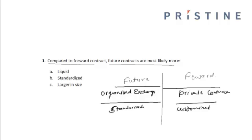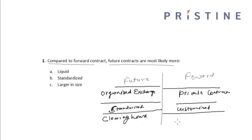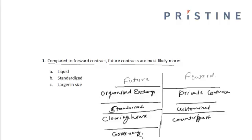A single clearing house is the counterparty to all future contracts, whereas in forward contracts the contract is with the originating party. So in the case of futures, investors deal with the clearing house, and in forward contracts the investors directly deal with each other or with the counterparty.